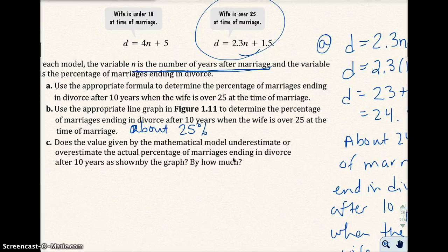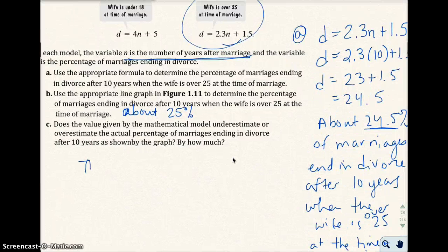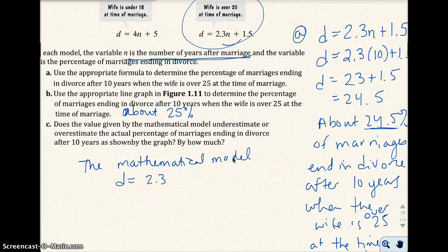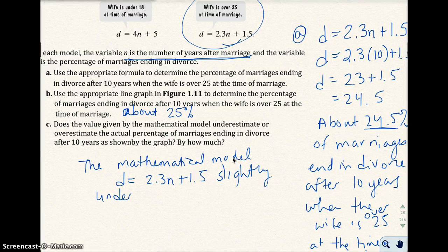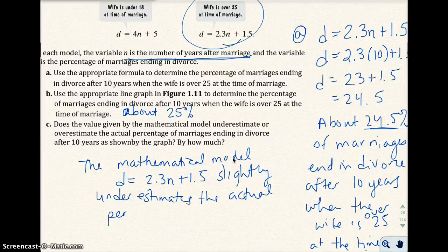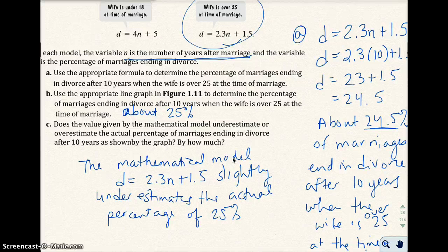Does the value given by the mathematical model underestimate or overestimate the actual percentage of marriages ending in divorce after 10 years as shown by the graph? Well it looks like the graph is slightly, well the value given by the mathematical model, which is right here, is slightly less than the actual percentage by the line graph. So the mathematical model, d equals 2.3n plus 1.5 is, or slightly, slightly underestimates the actual percentage of 25% because it gave you 24.5%.